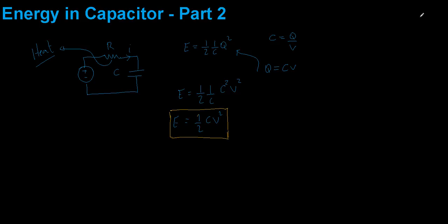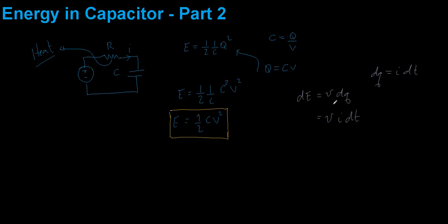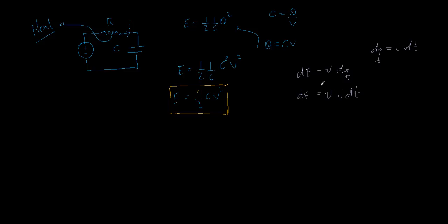In this video I want to give a second proof of this formula. In the previous video we derived this by writing that the differential of energy dE is equal to the voltage times the differential of charge, which can also be written as voltage times current times the differential of time, since dq equals current times dt. So we are going to use dE = V·I·dt.